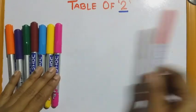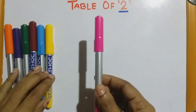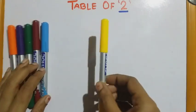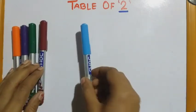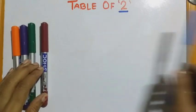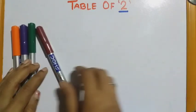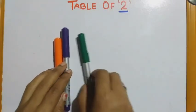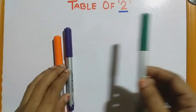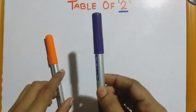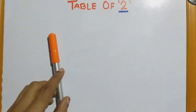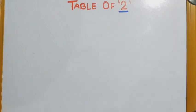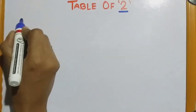Red color. Pink color. Yellow color. Blue color. Brown color. Green color. Purple color. Orange color. Start writing.